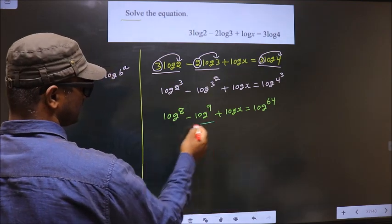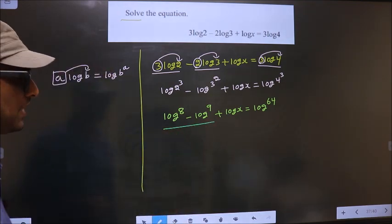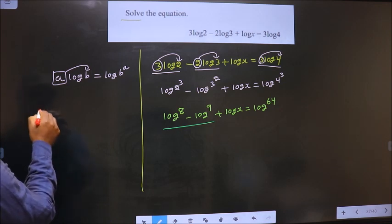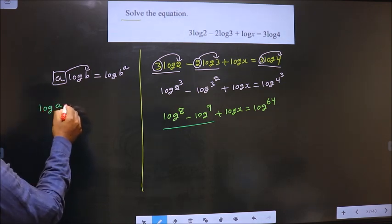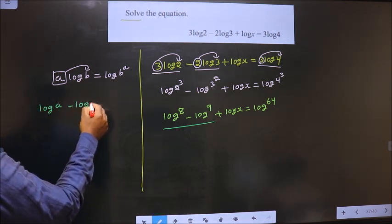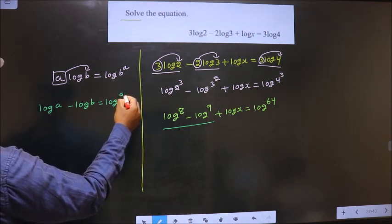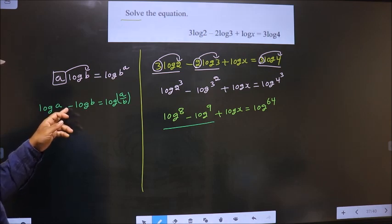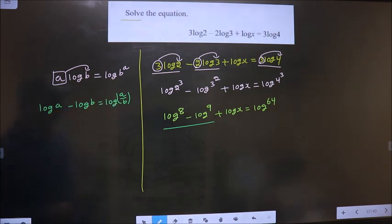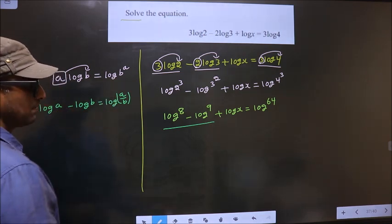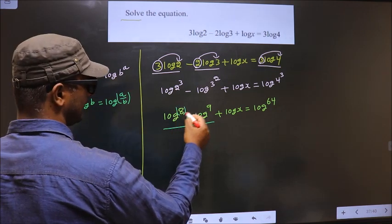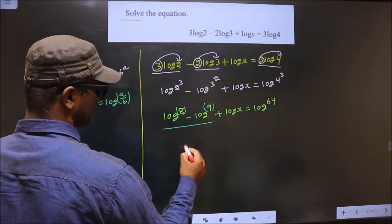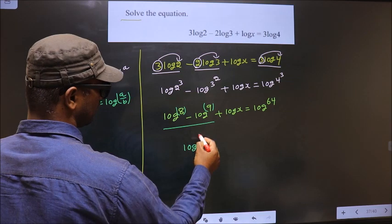Now on these two terms we apply the formula: log a minus log b equals log a by b. When you have subtraction, the result is a fraction. In place of a you have 8, in place of b you have 9, so you get log 8 by 9.